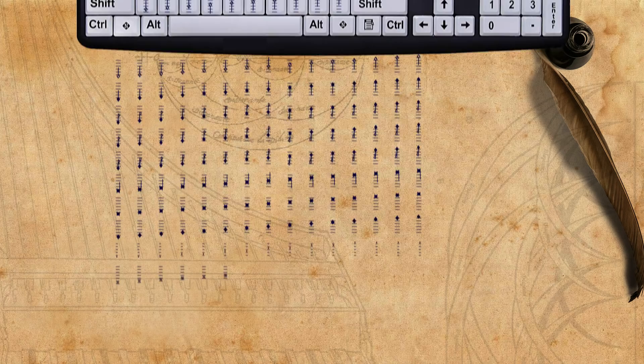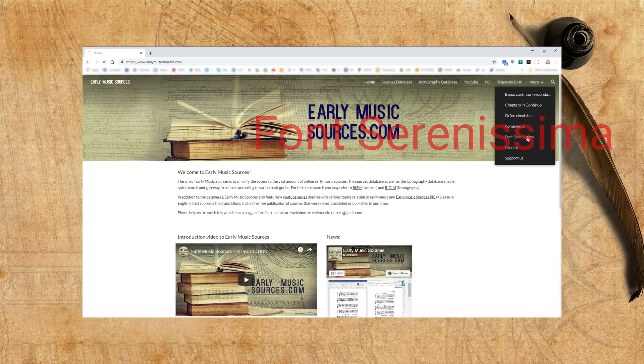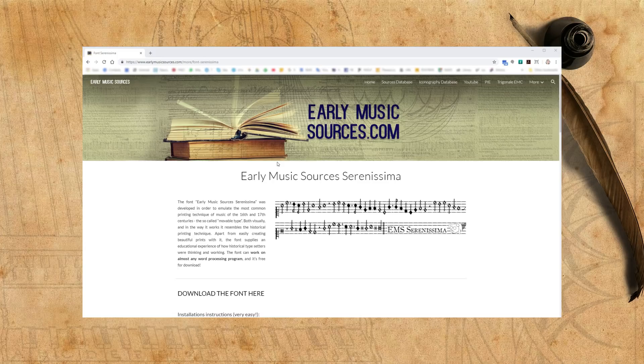But before looking into this, you first need to install the font. Go over to earlymusicsources.com, and under the menu More, you'll see Font Serenissima. There, you can download the font file. Download it, and install it on your system. This might be different on each system, but in most cases it is rather straightforward.